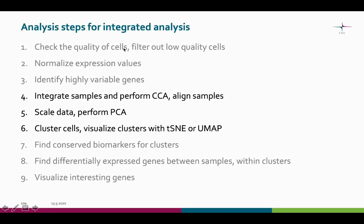After we have performed the initial steps to the two samples, it is time to integrate them. We use canonical correlation analysis to align the samples. After this, the samples are joined into one R-object and treated similarly as in the basic one-sample analysis. The data is scaled, PCA is used to reduce the dimensions, after which we can again cluster the cells and visualize our clustering results.